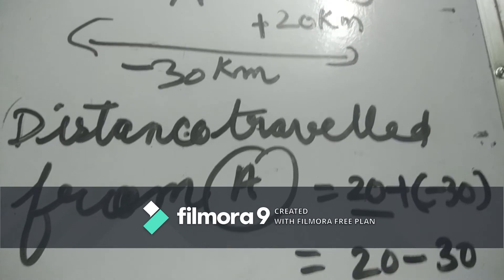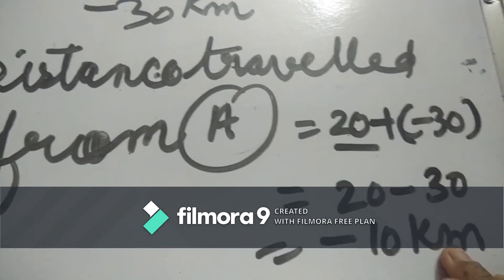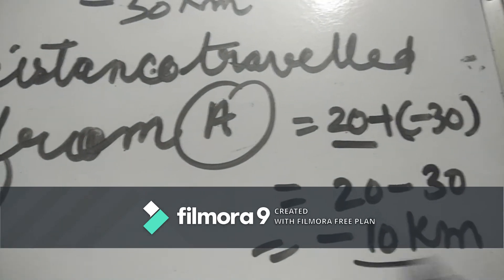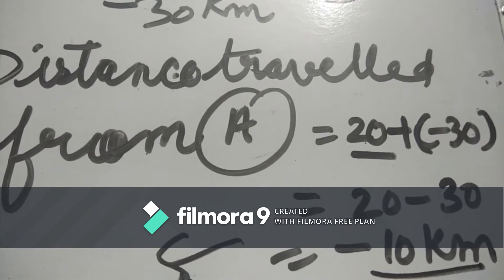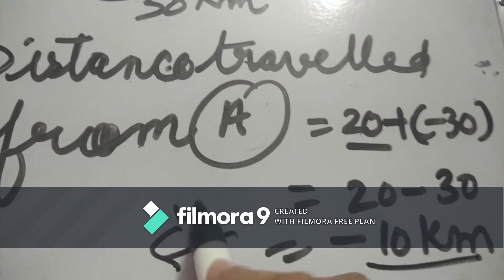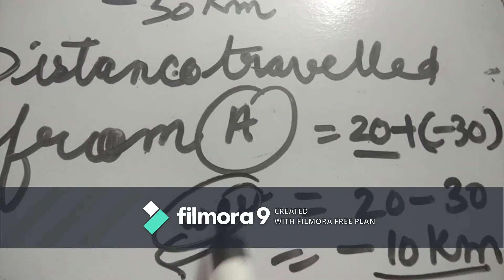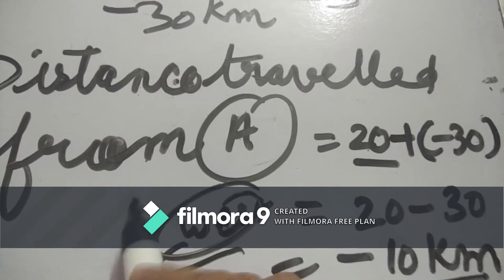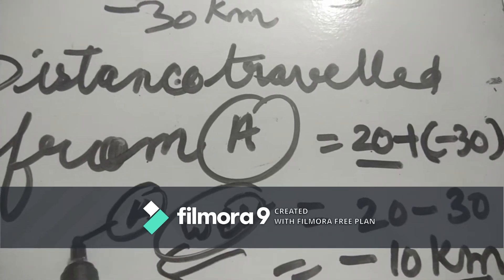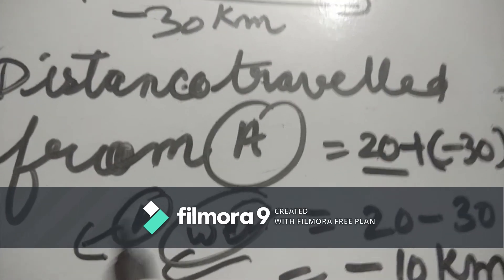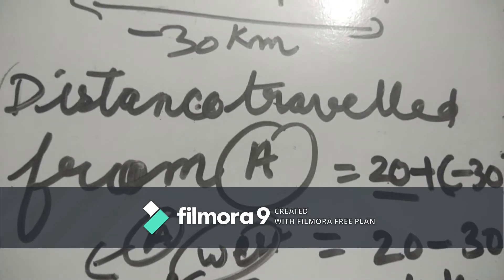So Rita's final position is minus 10 kilometers from point A, which means she is 10 kilometers towards the west direction from point A.